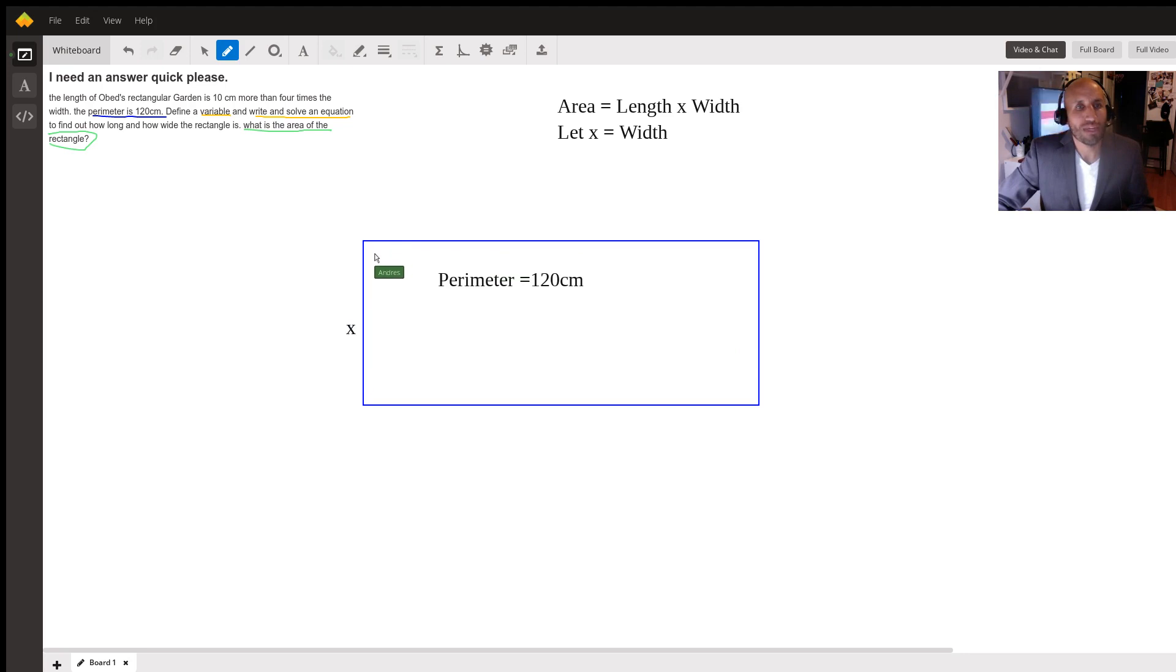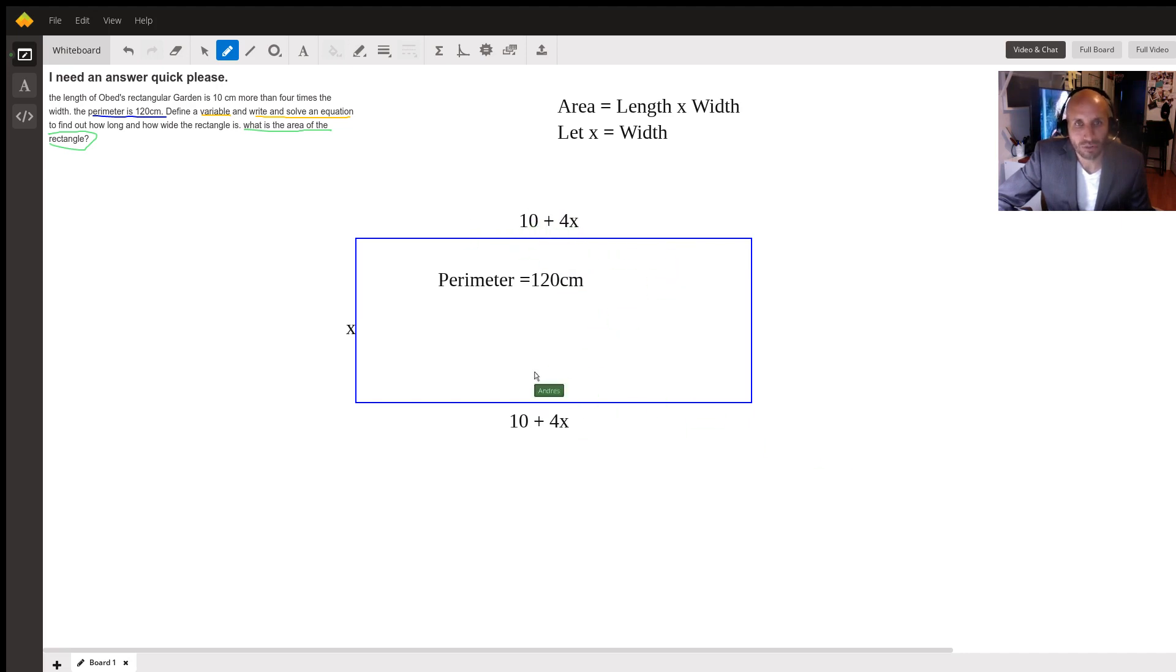And then we'll let this up here be exactly what the problem statement tells us, which is to let it be 10 centimeters more, so 10 plus 4 times the width, or x. It's an algebraic problem. So what this is telling me is that the width of this rectangle is x and then the length is 10 more than 4 times x, the width. And because this is a rectangle, we know that the sides are equal, so the length, this length, is equal to this length, and we also know that the width is going to be equal on the other side.